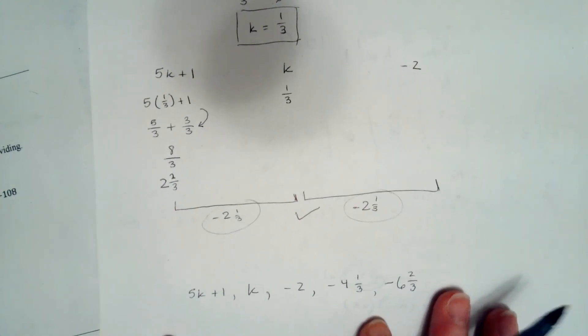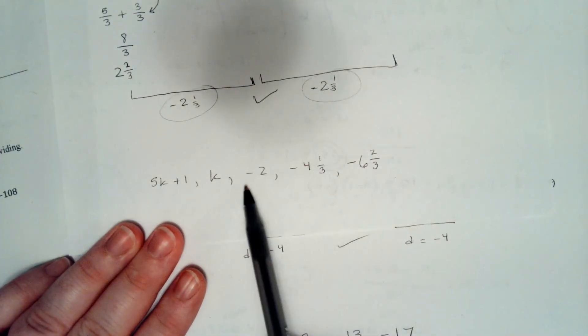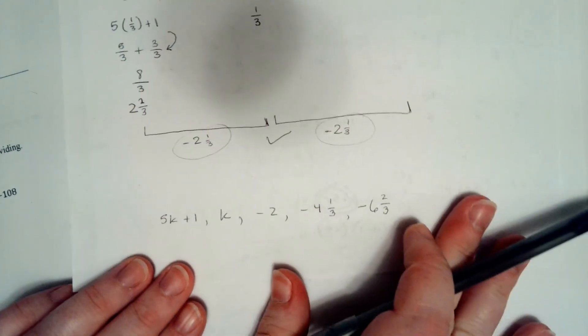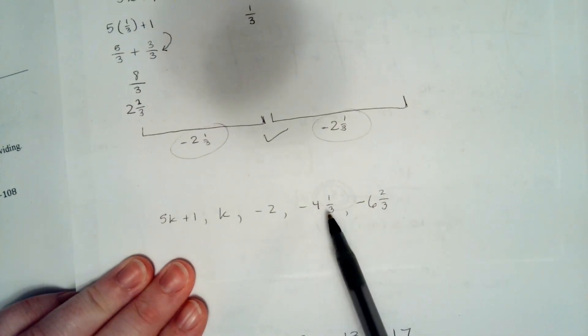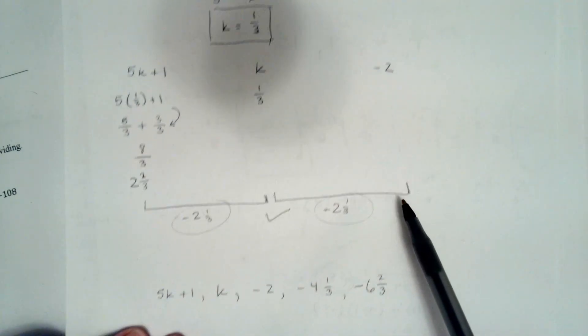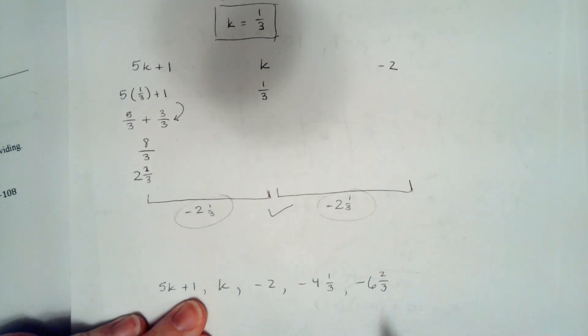Alright, now if we go back and plug that in and we keep counting, if we go 2 and 1 third further in the negative direction, we're going to get negative 4 and 1 third. Then 2 and 1 third more in the negative direction is going to give us negative 6 and 2 thirds. So k was 1 third, and negative 4 and 1 third and negative 6 and 2 thirds are the solutions.